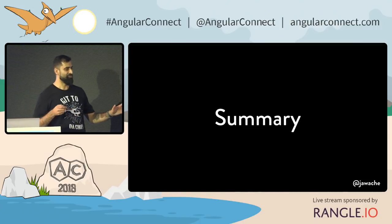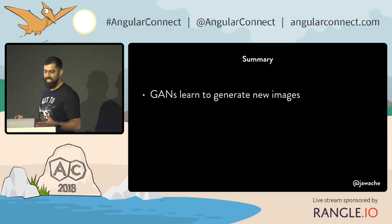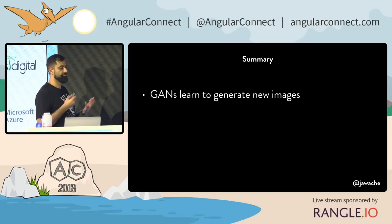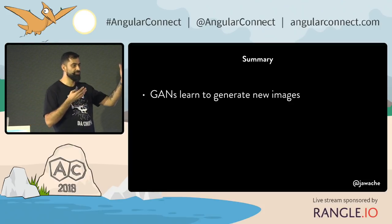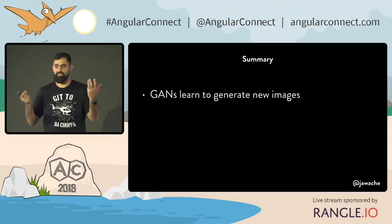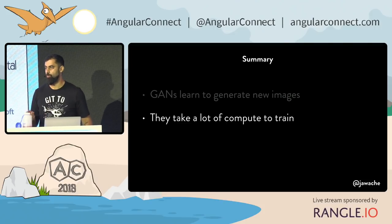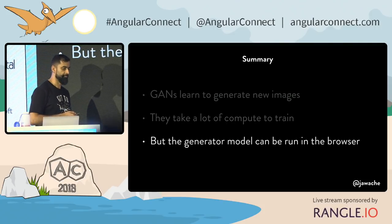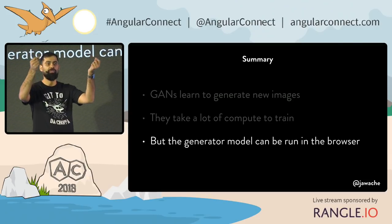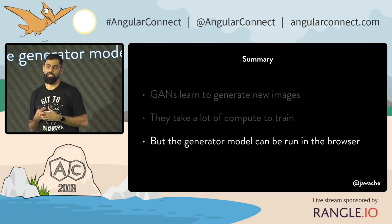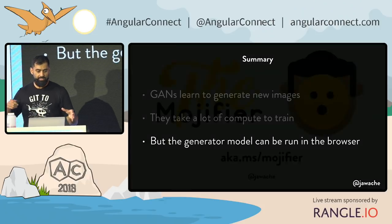Just to summarise all of that: GANs learn to generate new images — they're generative. Other types of neural networks are discriminatory; GANs are generative. They can generate things that have never existed before. But they take a lot of compute to train — far more than a normal neural network. Eventually, when you train one up, you can export that model into a format which TensorFlow.js can load, and run it in the browser.